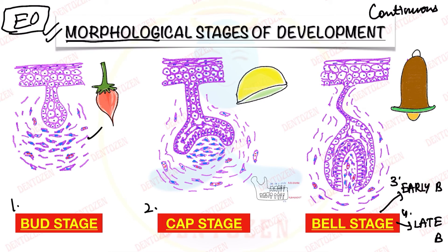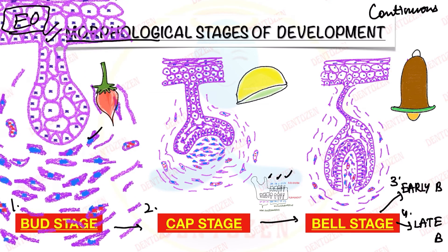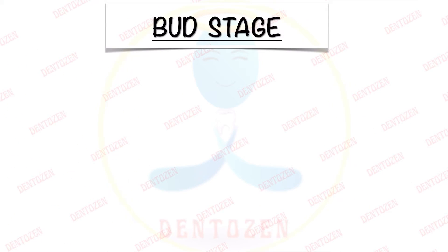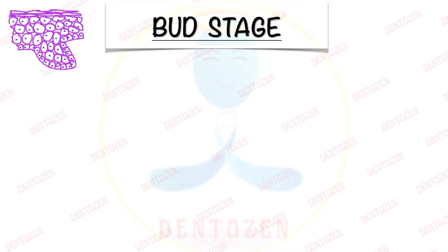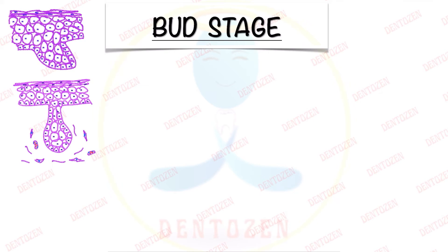Now different teeth have different sizes and shapes — incisors, premolars, molars are all different. But in their development, all their enamel organs will go through the same stages. That's why we discuss tooth development in these stages. So let's discuss the bud stage in detail. In the first video we have seen that we have dental lamina which is made up of epithelial cells.